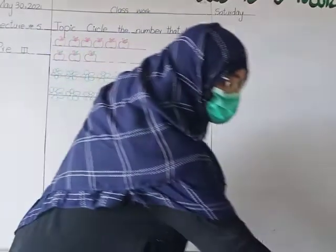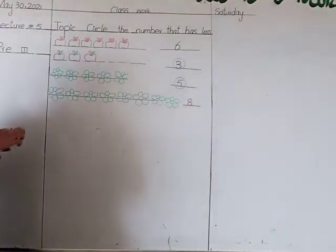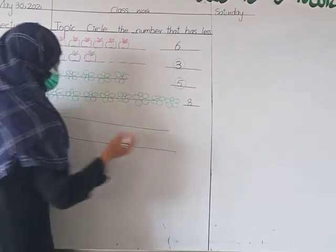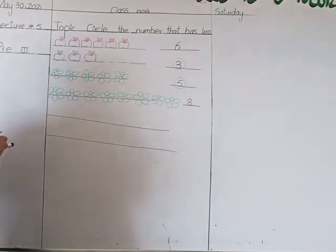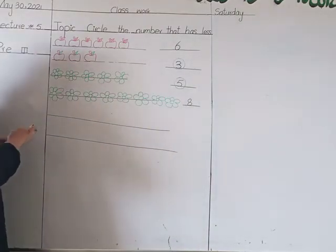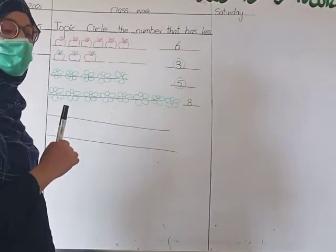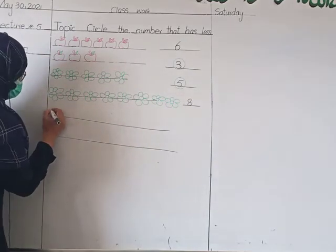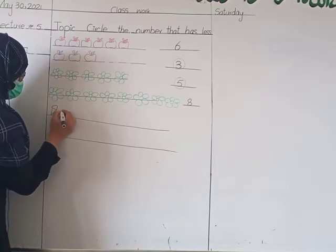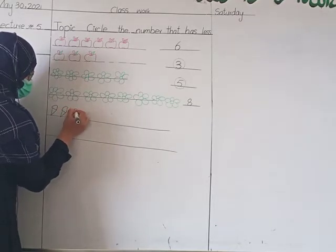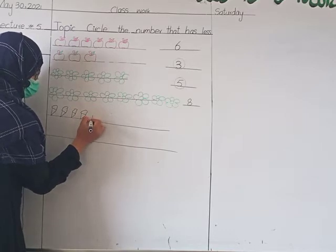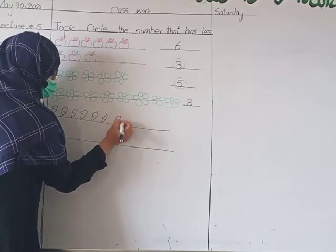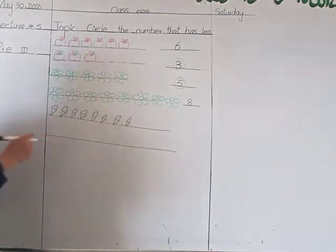The next one is we have some cones. Here we have to draw some cones. How many cones do we have? Let's count from your book: one, two, three, four, five, six, seven, and eight. We have eight cones. So let's draw them: one, two, three, four, five, six, seven, eight. We have eight cones here.